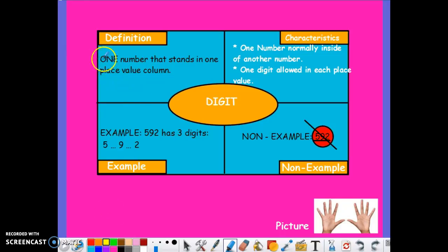To define digit, it's one number that stands in one place value column. In other words, some of the characteristics that a digit has is one number normally inside another set of numbers or digits. One digit is allowed in each place value.